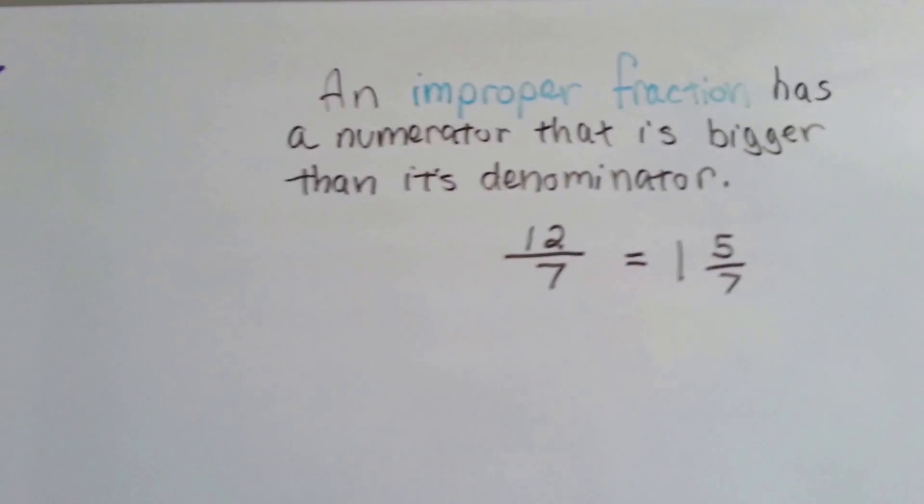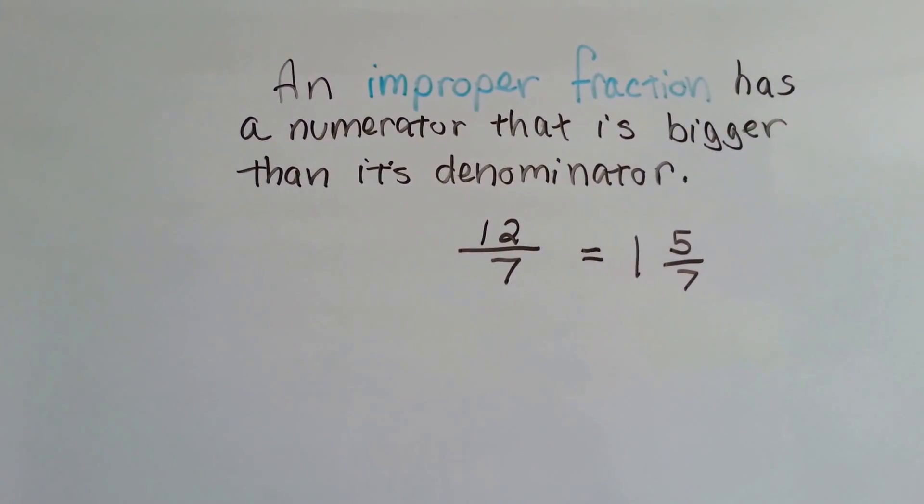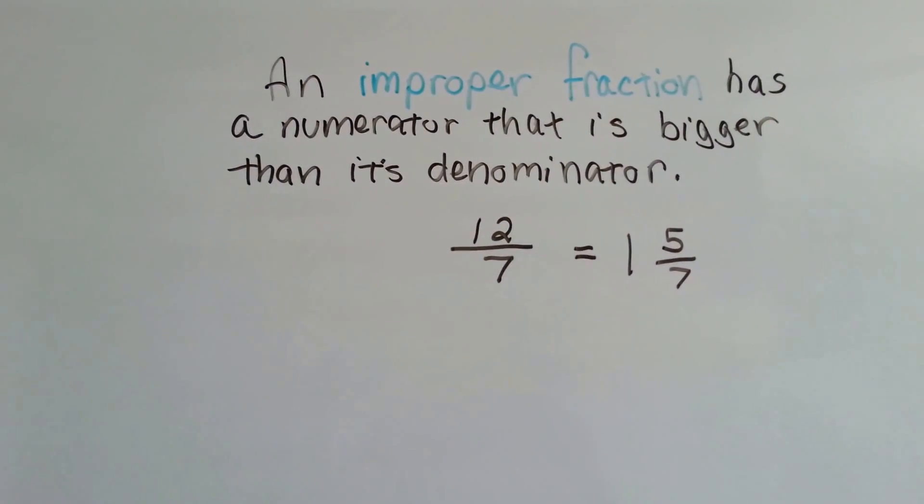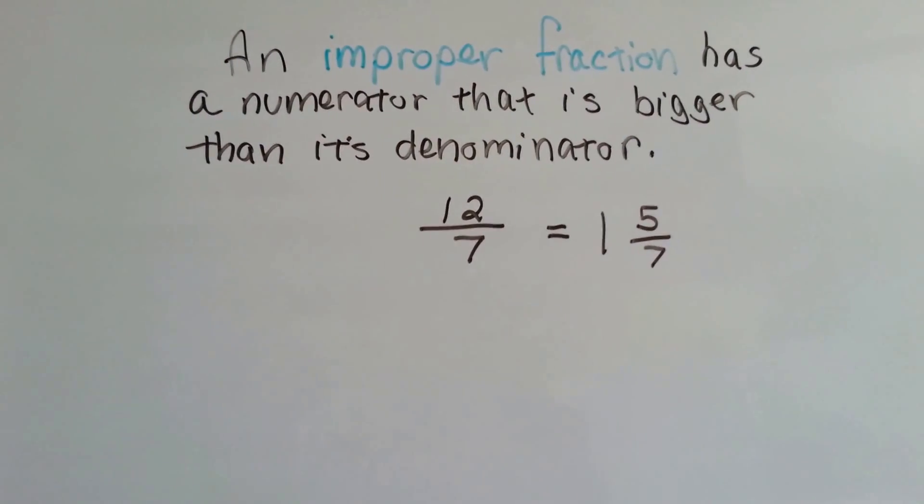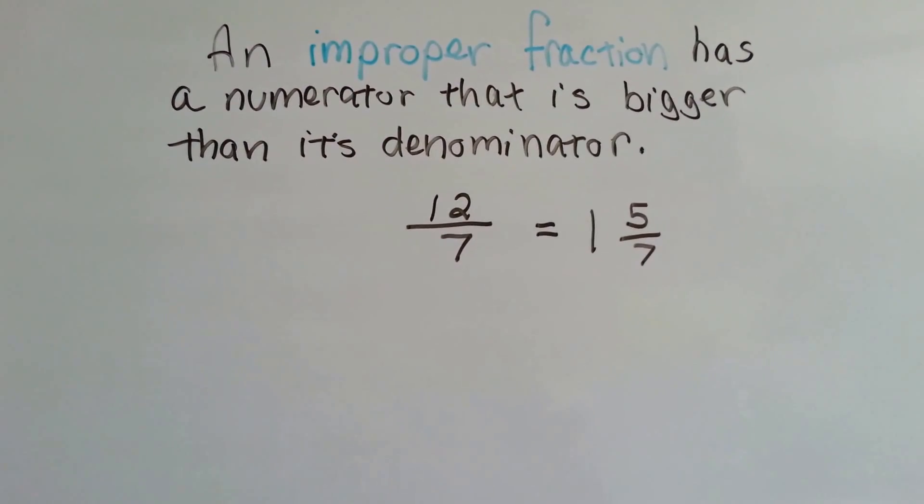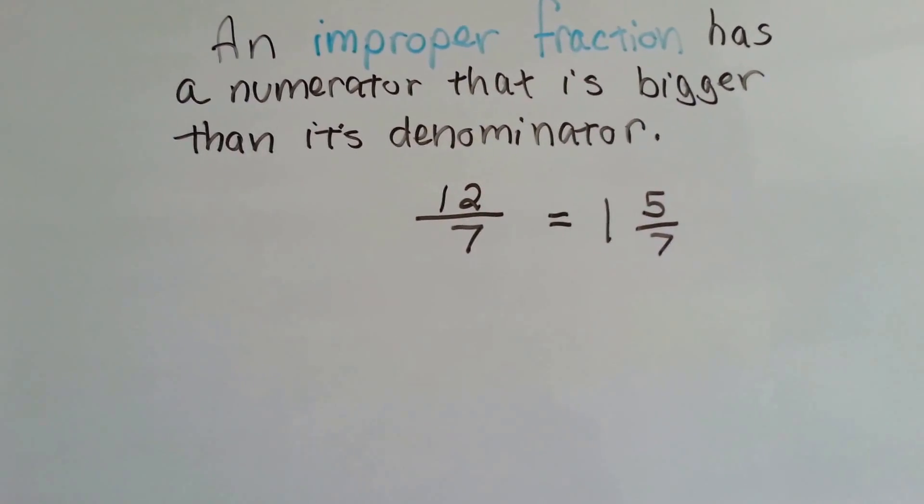I want to remember an improper fraction has a numerator that is bigger than its denominator. See the 12 is bigger than the 7? That's an improper fraction that actually equals 1 and 5 sevenths. Keep that in mind.